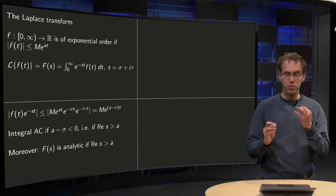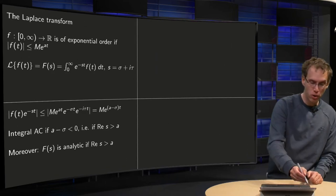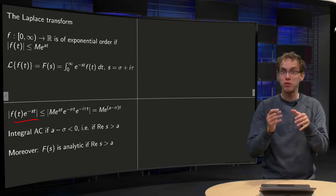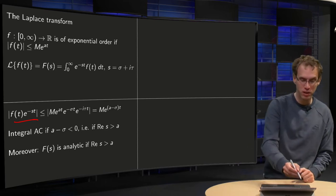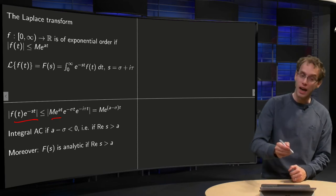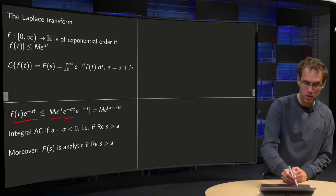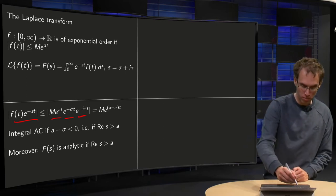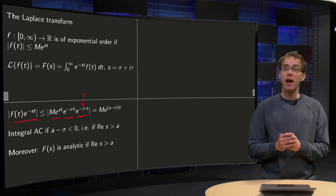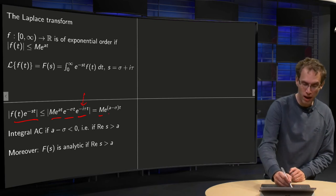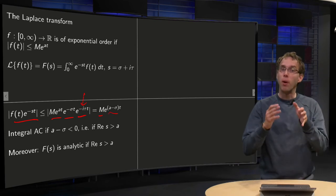When can you compute this integral? Well, the norm of f times e^(-st), you know that your f was below some exponential function, M times e^(at), and you can write your st as σt - itτ. Well, the norm of this part is 1 of course, so you find something which is below M times e^((a-σ)t).